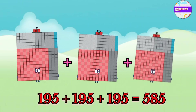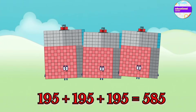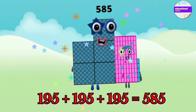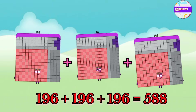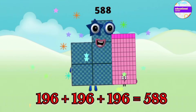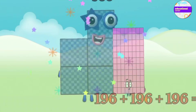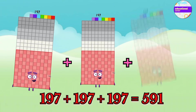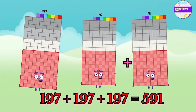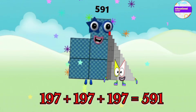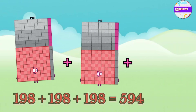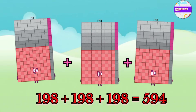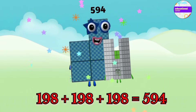195 plus 195 plus 195 equals 585. 196 plus 196 plus 196 equals 588. 197 plus 197 plus 197 equals 591. 198 plus 198 plus 198 equals 594.